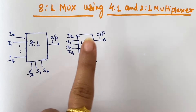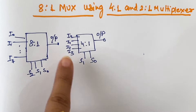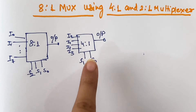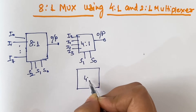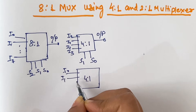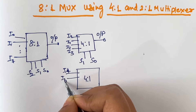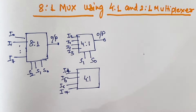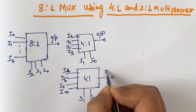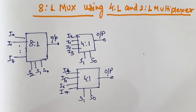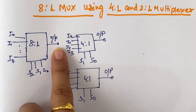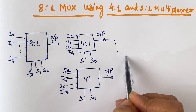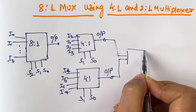For the 8-to-1 multiplexer we need i0 to i7. The first 4-to-1 multiplexer covers i0 to i3. We need another 4 input lines, so we take a second 4-to-1 multiplexer covering i4, i5, i6, and i7, also with select lines s1 and s0 and 1 output line. This gives us all 8 input lines i0 to i7.